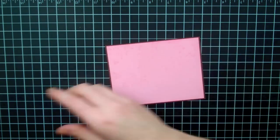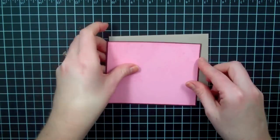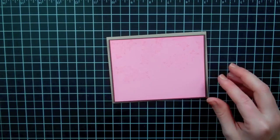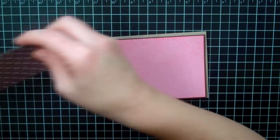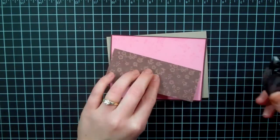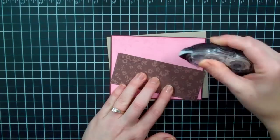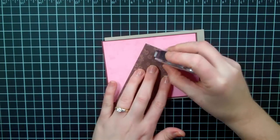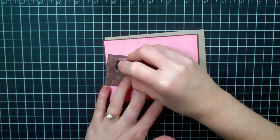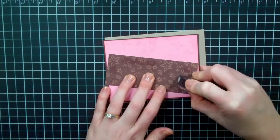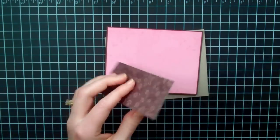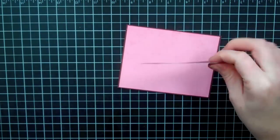And then I have a Kraft card base that this will go on, but I'm not going to do that yet. Don't you like how my brain's working today? It's like here and there and everywhere. This piece of designer series paper is cut at five by two inches, and it's just going to go right along at the bottom of this.